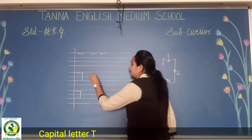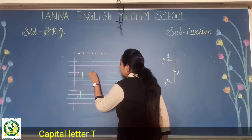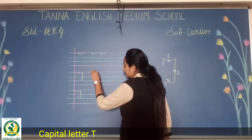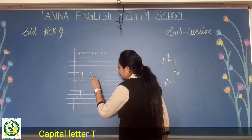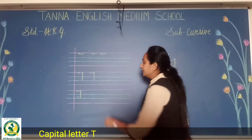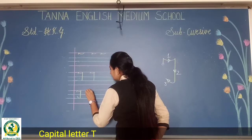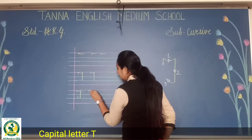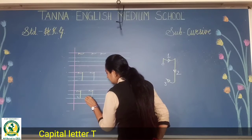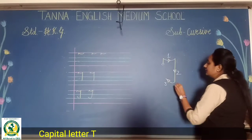Now again: chhoti si line karke yaha pe aise turn kiya, aur yaha se third line, takham hai, straight line ki — okay. Then chhoti si line karke aise turn karke straight line, and again like this turn. See, I am doing over here.